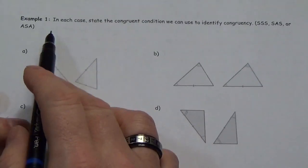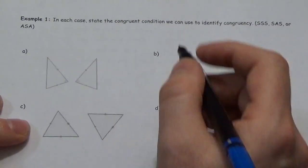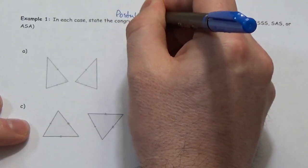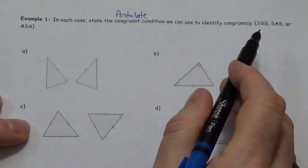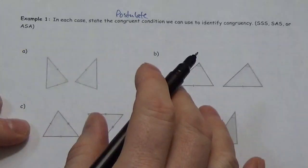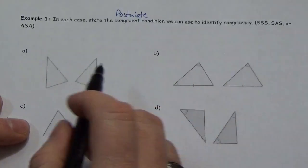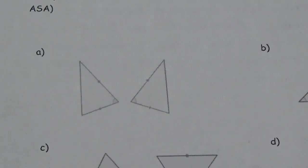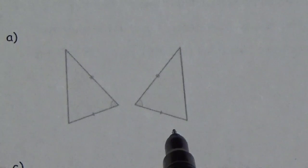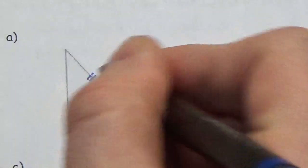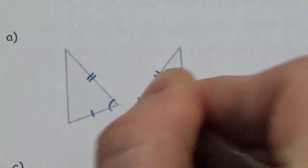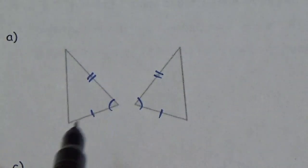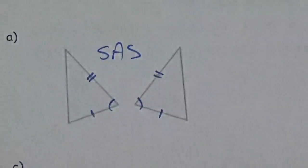Now let's take a look at an example. The question says: in each case, state the congruent condition. We're going to identify which postulate — SSS, SAS, or ASA — applies. Note we're not listing AAS separately because it's just a special case of ASA. In the first pair, two sides are the same and the angle between them is the same — that's clearly side-angle-side, so those two triangles are congruent by SAS.